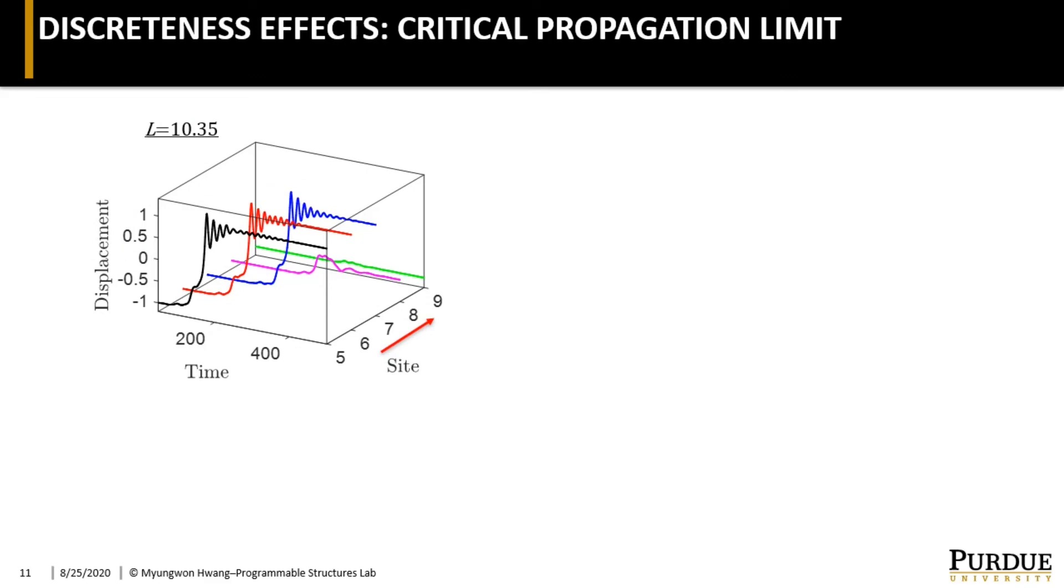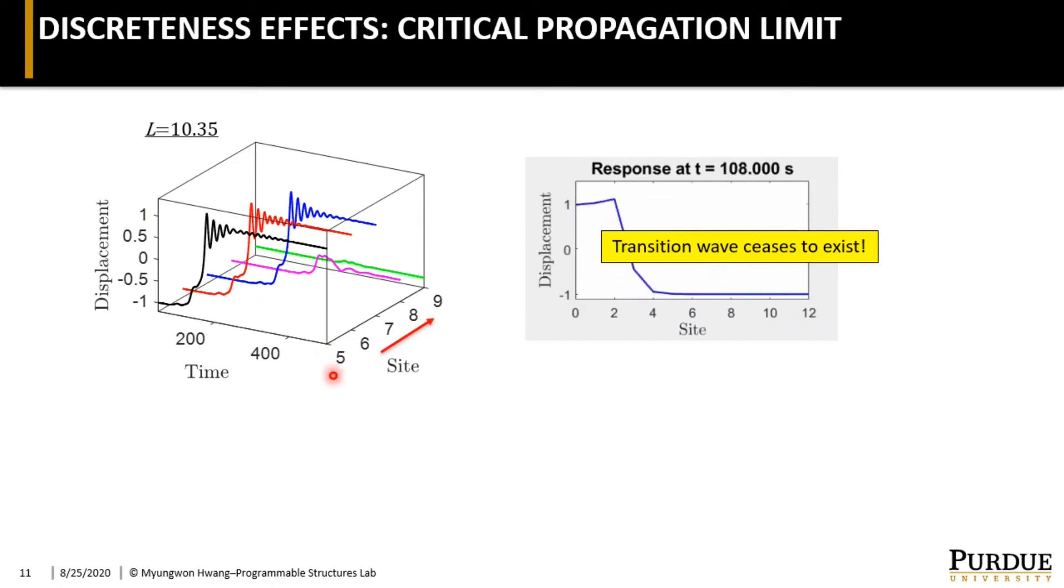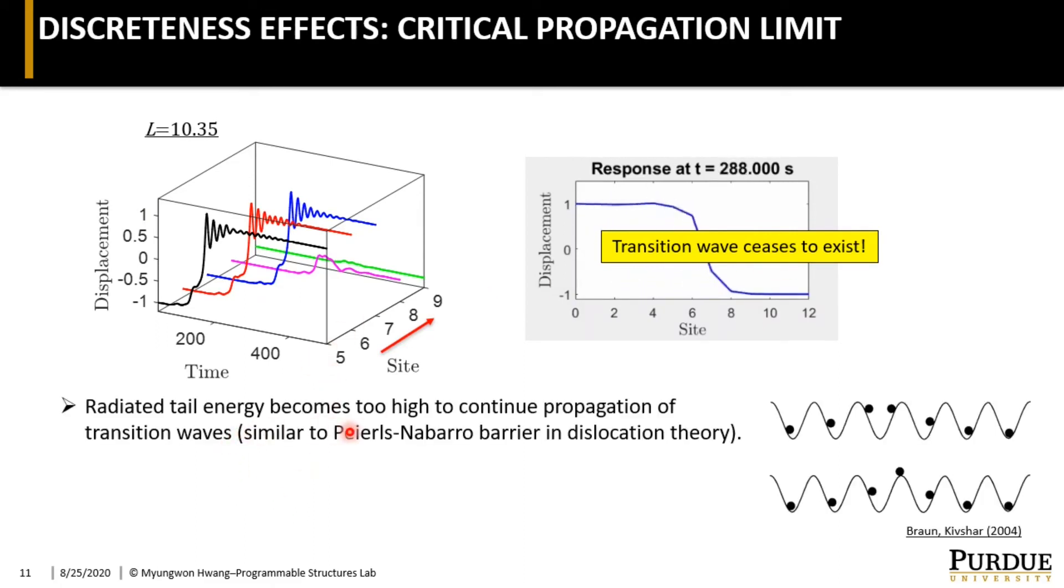There also exists a certain upper critical limit where such amplification of the tail motion can occur. Once the radiated tail energy becomes too high, the wave transportability of this lattice is completely gone, as can be seen in this video. This behavior is qualitatively similar to what's observed for Peierls-Nabarro barrier in dislocation theory, where there should be some excess energy large enough to overcome the energy difference between the two configurations.